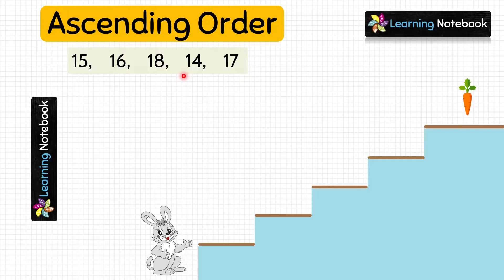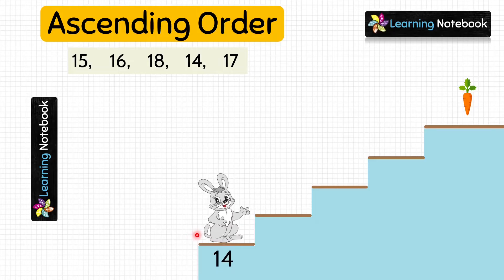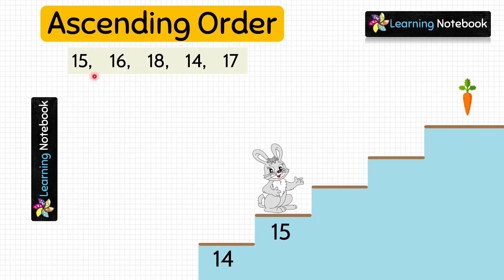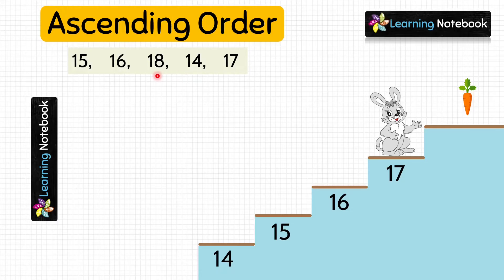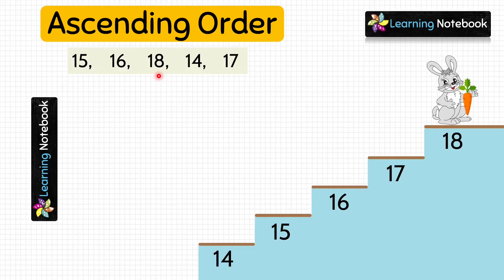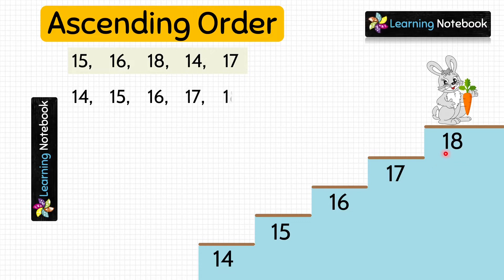Which number will come first? Yes, the smallest number, and the smallest number is 14. Next number will be 15, then 16, then 17, and lastly 18. So finally bunny has got the carrot, and we have the ascending order as 14, 15, 16, 17, and 18.